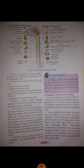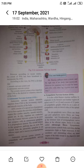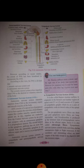The autonomic nervous system transmits impulses from the central nervous system to the involuntary organs and smooth muscles of the body. It consists of a special set of peripheral nervous system that regulates the activities of involuntary organs.